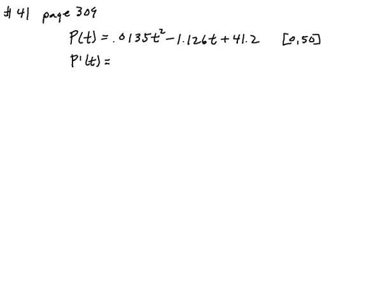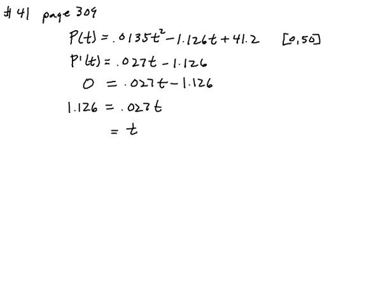Taking the derivative: 2 times 0.0135 is 0.027 and I'll drop the power to just t, then minus 1.126. Set that equal to zero: 0.027t minus 1.126 equals 0, so 1.126 equals 0.027t. Therefore, t is equal to 41.7.